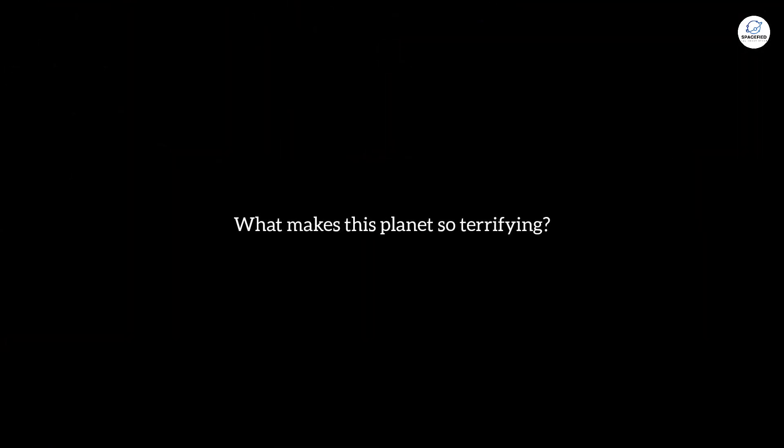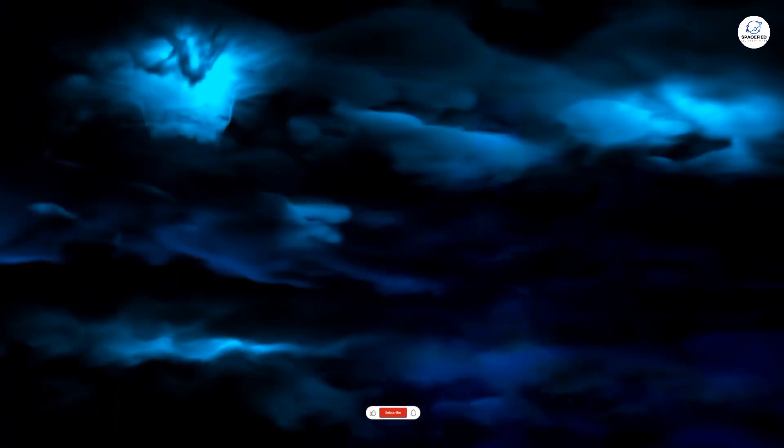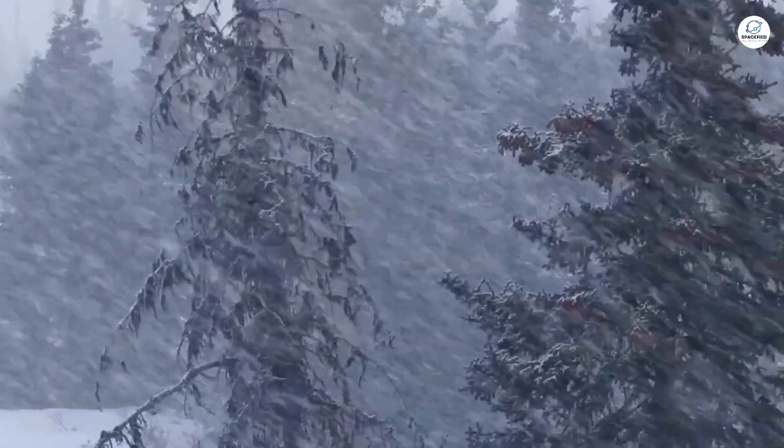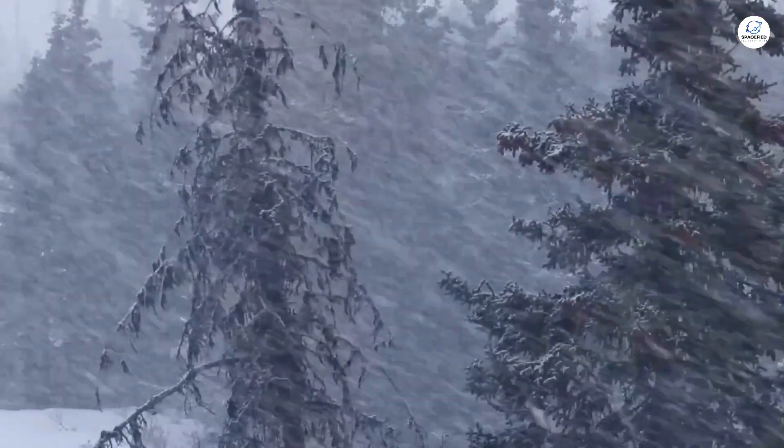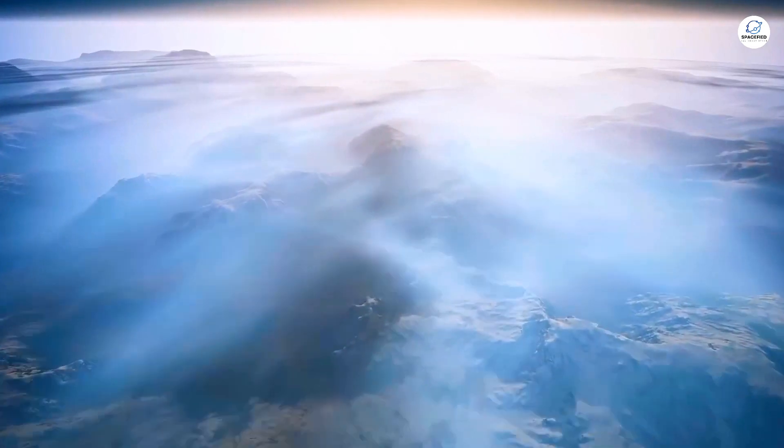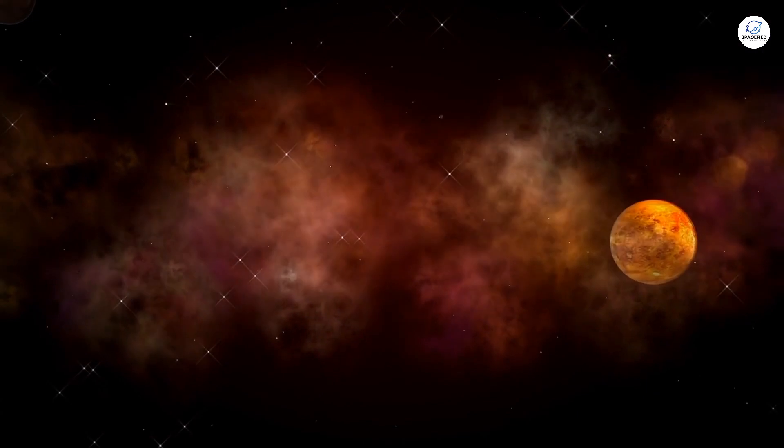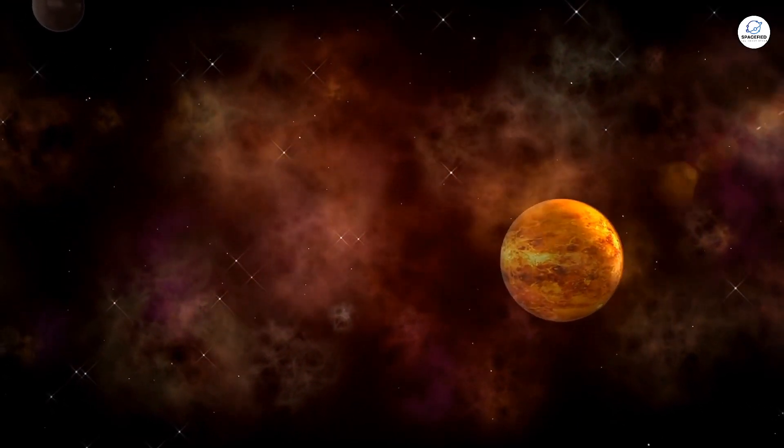What makes this planet so terrifying? For starters, it's a world of extremes. Imagine a place where the temperature swings from scorching heat to bone-chilling cold in a matter of hours. A place where the atmosphere is so thick with toxic gases that it would make Venus look like a breath of fresh air.